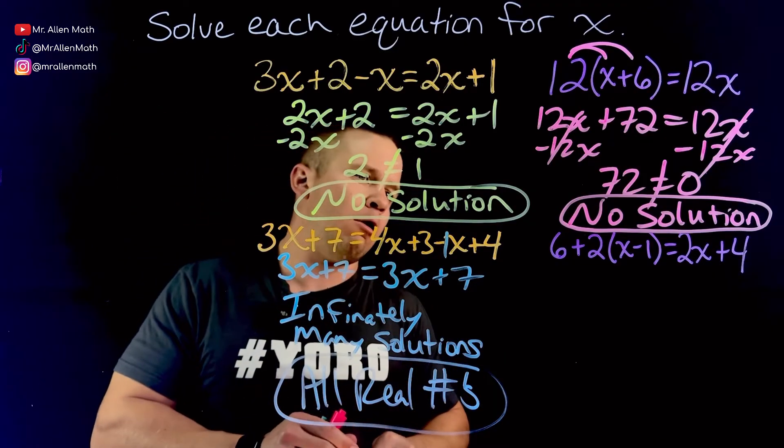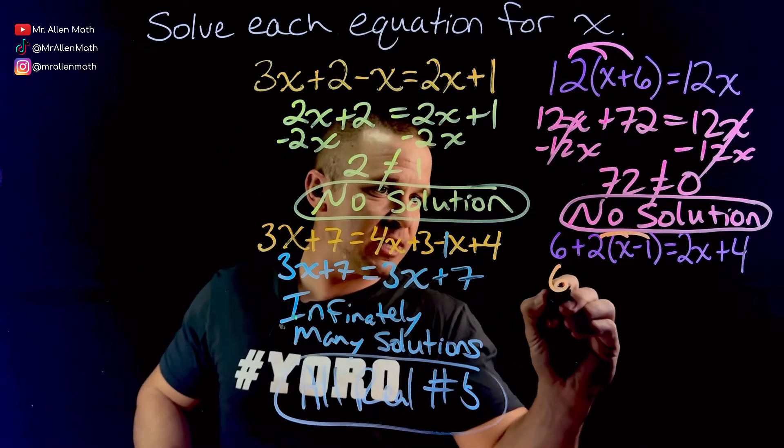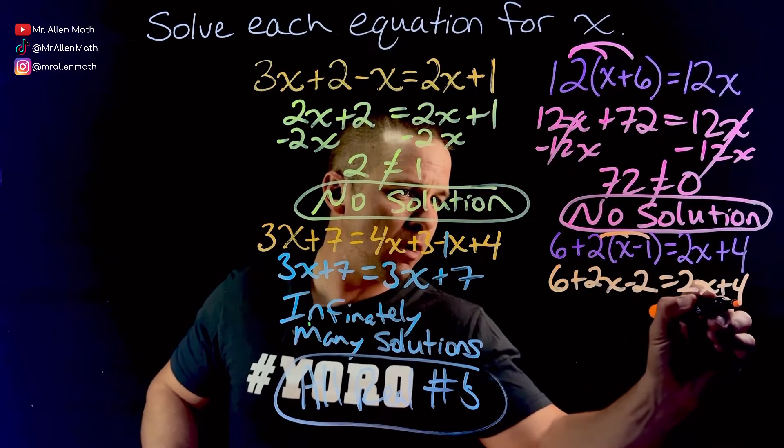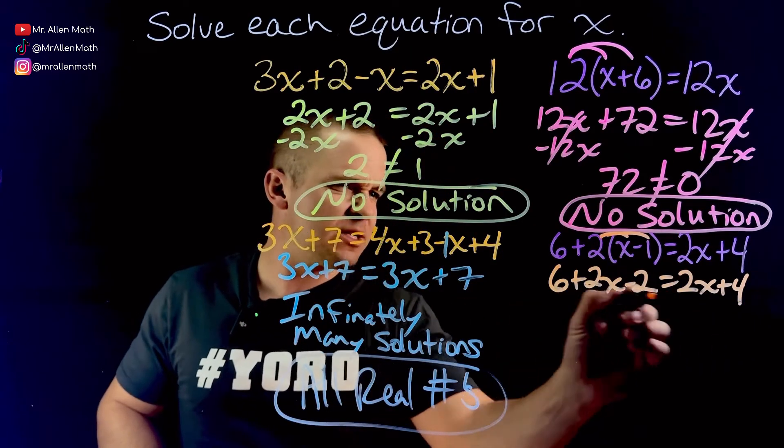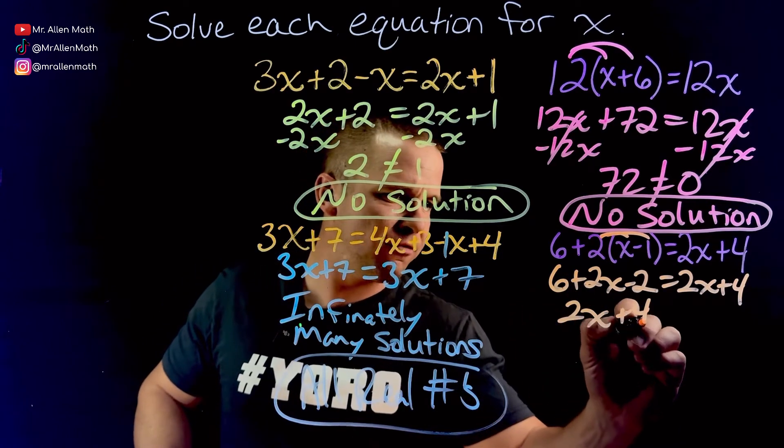So over here I've got some distributing to do, I gotta distribute that 2 in, so I'm gonna have 6 plus 2x minus 2 equals 2x plus 4. All right, let's combine some like terms. We've got 2x, 6 minus 2 is positive 4.